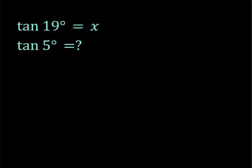Hello everyone. In this video we're going to be evaluating a trigonometric expression in terms of another one. We're given that tangent 19 degrees is equal to x, and we're supposed to find tangent 5 degrees in terms of x.